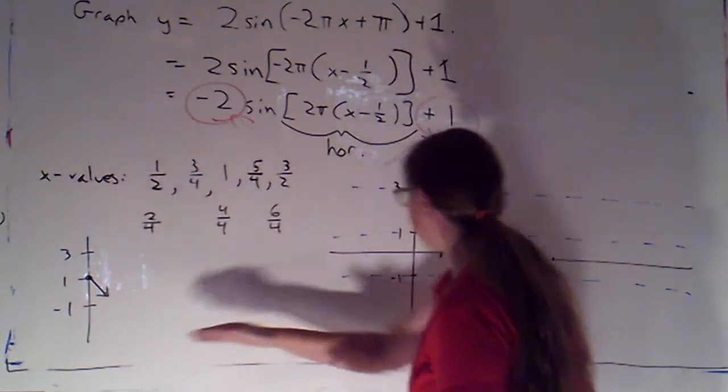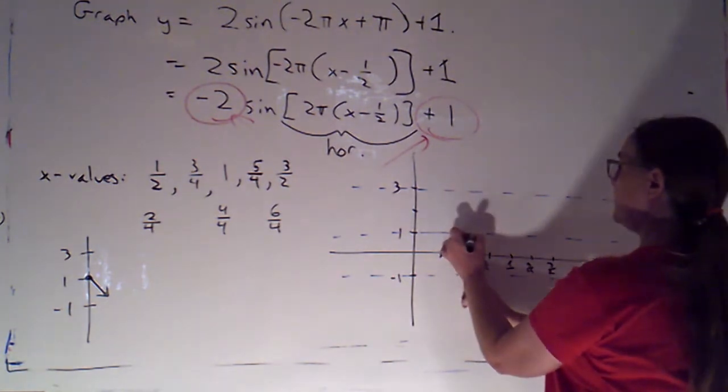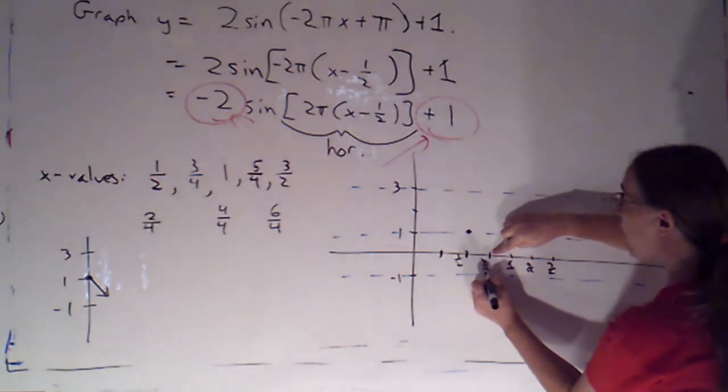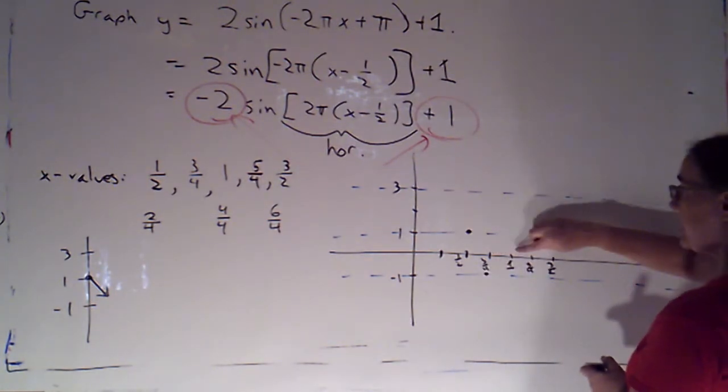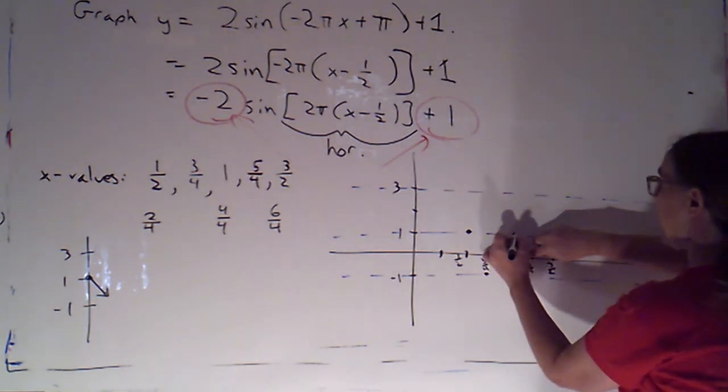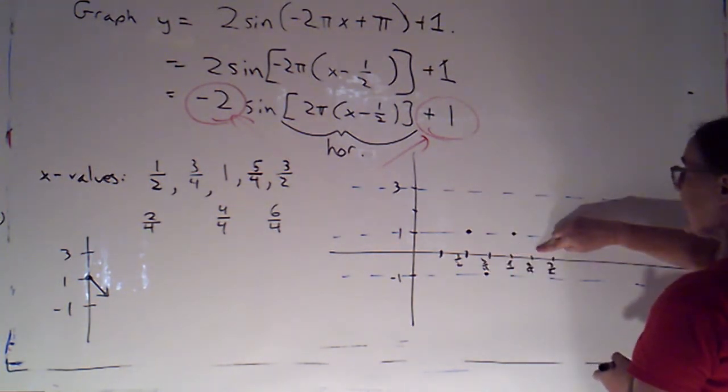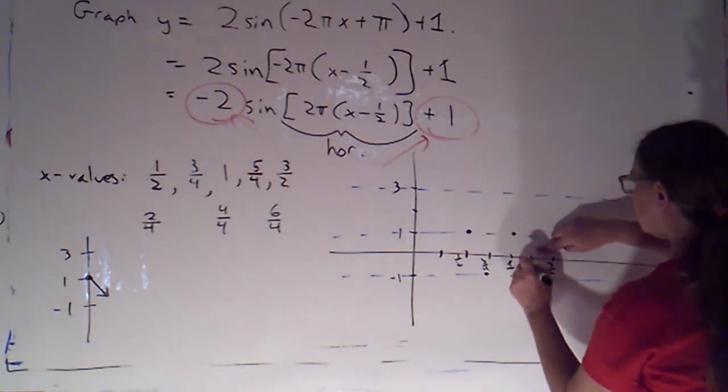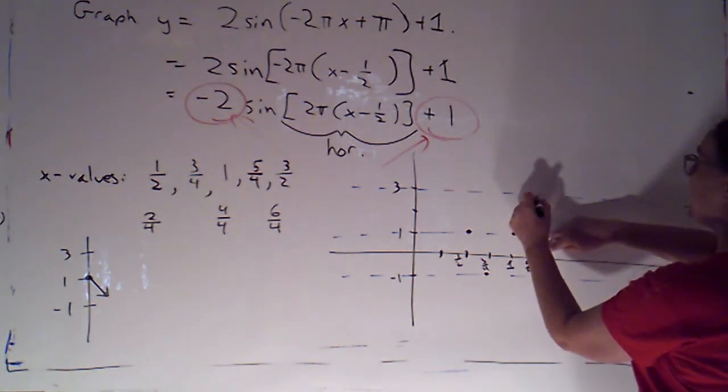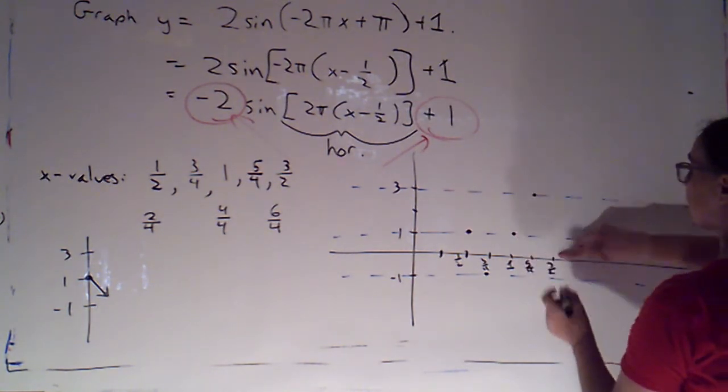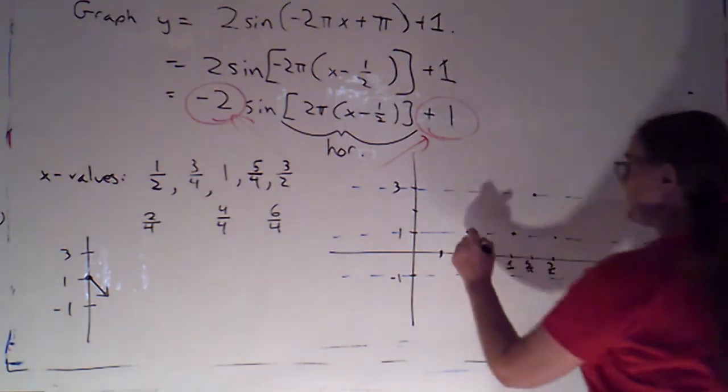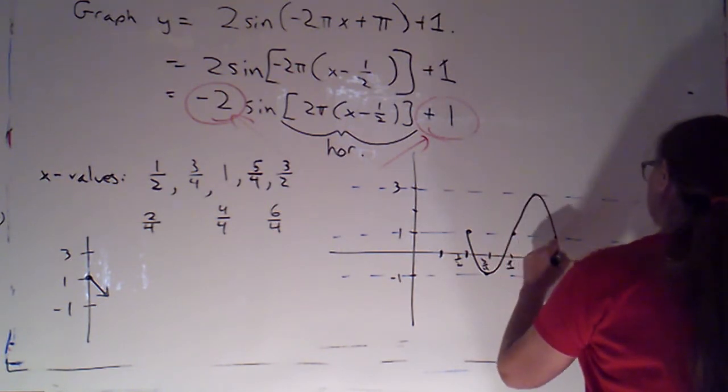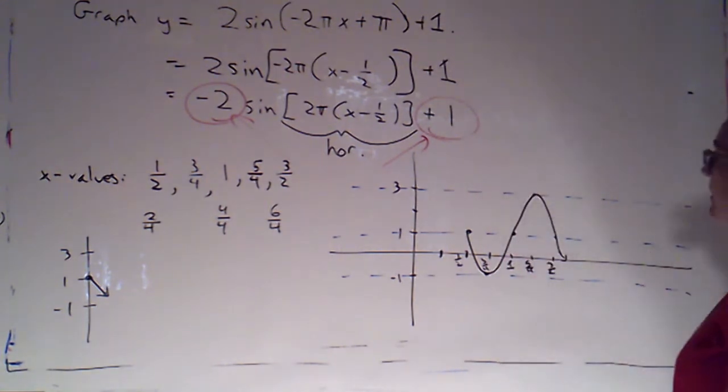Now, we're starting in the middle and going down. So at the first x value at 1/2, we're at a middle value of 1. The next important x value, we're at a low point. So that's going to be at negative 1. The next important x value was 1. We're back to a middle value of 1. Next important x value was 5/4. We're up at a high value of 3. And then the next important x value was 3/2 and we're back at 1. So I can connect those dots, making sure I have arrows to indicate what's going on.